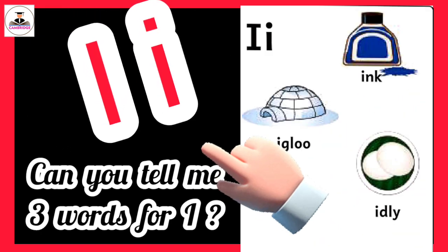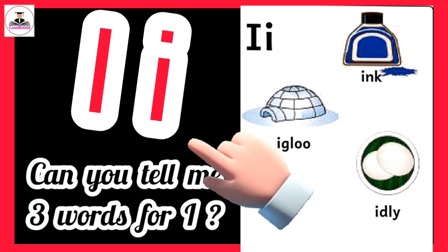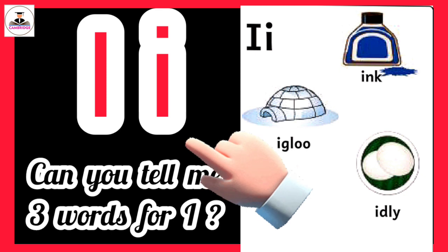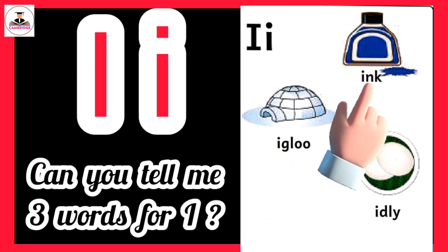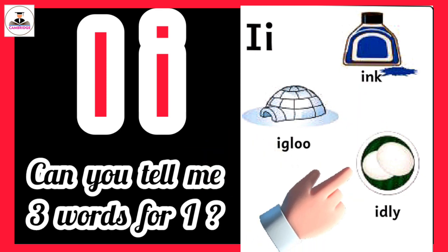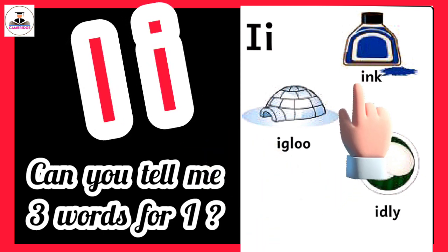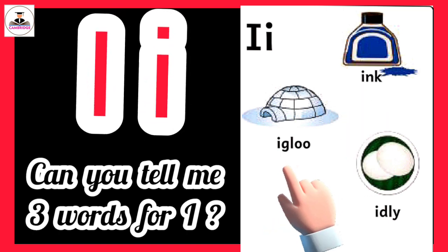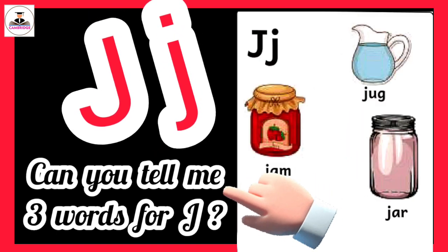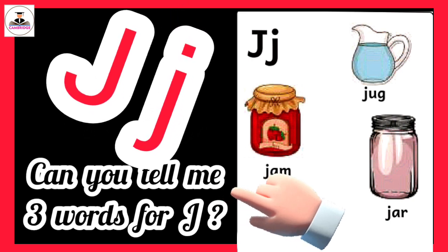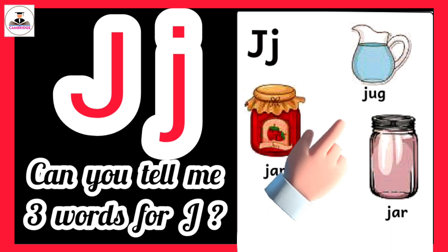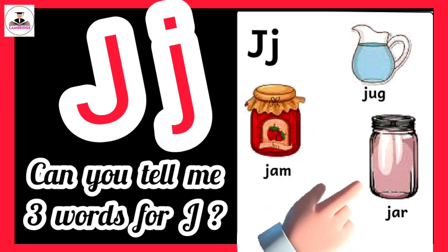Can you tell me three words for I? I for ink, idly and igloo. Can you tell me three words for J? J for jug, jam and jar.